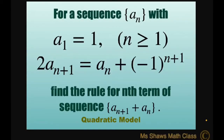Hi everyone. For sequence a sub n, our first term is 1, and 2 times a sub n plus 1 equals a sub n plus negative 1 to the power of n plus 1. This is for n greater than or equal to 1. We're going to find the rule for the nth term of the sequence a sub n plus 1 plus a sub n.